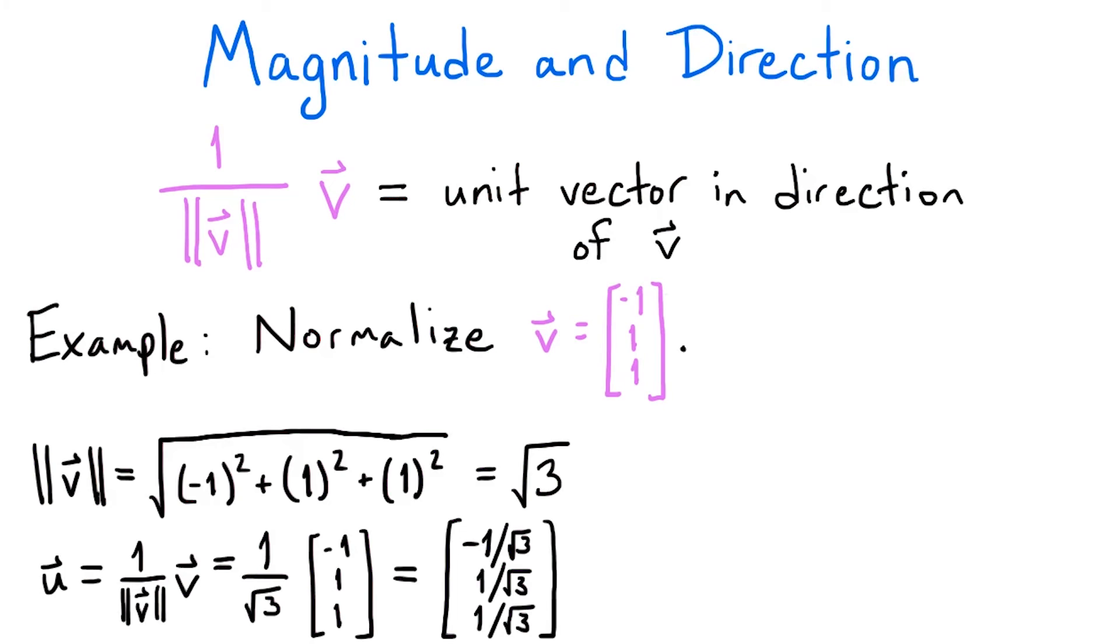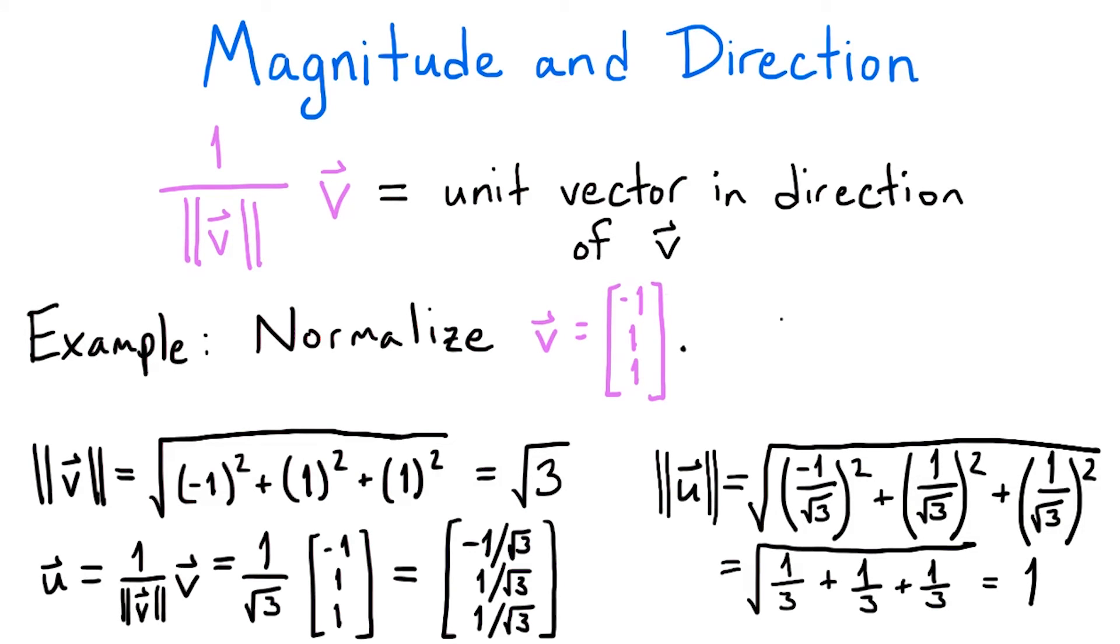Then we multiply v by 1 over the square root of 3. The resulting vector u would be negative 1 over the square root of 3, 1 over the square root of 3, 1 over the square root of 3. We can check that u is actually a unit vector by computing its magnitude. In this case, the length of u is the square root of negative 1 over the square root of 3 squared plus 1 over the square root of 3 squared plus 1 over the square root of 3 squared, which equals the square root of 1 third plus 1 third plus 1 third, which is the square root of 1, which is also 1. Since u has a magnitude of 1, it is a unit vector. It is the unit vector pointing in the same direction as v, so u is the normalization of v.